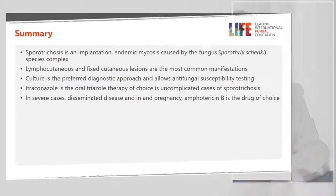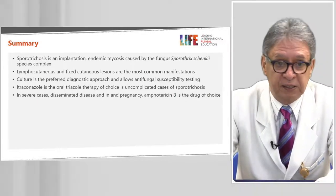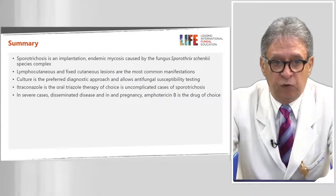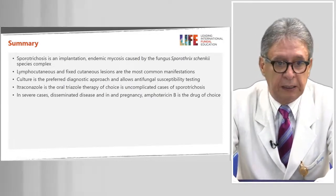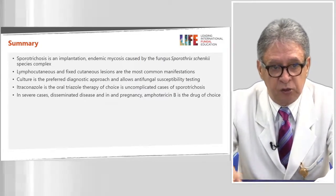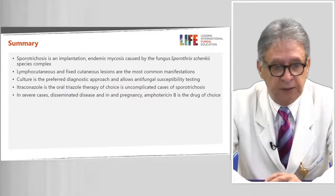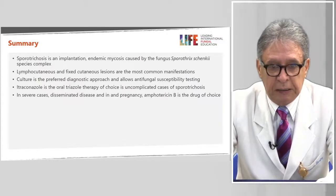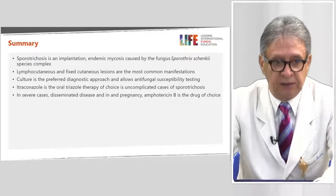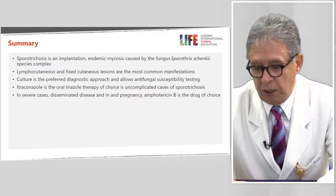In summary, sporotrichosis is an implantation mycosis that is endemic and caused by the fungal complex Sporothrix schenckii. Lymphocutaneous and fixed cutaneous lesions are the most frequent manifestations. The gold standard of diagnosis is culture, which also allows antifungal susceptibility testing. Oral itraconazole is the treatment of choice for cutaneous cases, and in severe cases, Amphotericin B — alone or combined with itraconazole — can be used. Thank you very much for your attention.